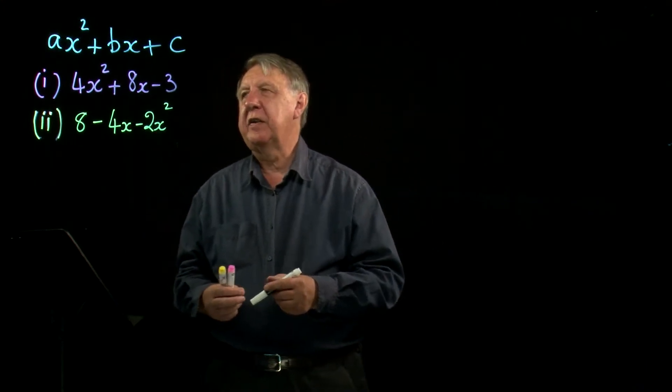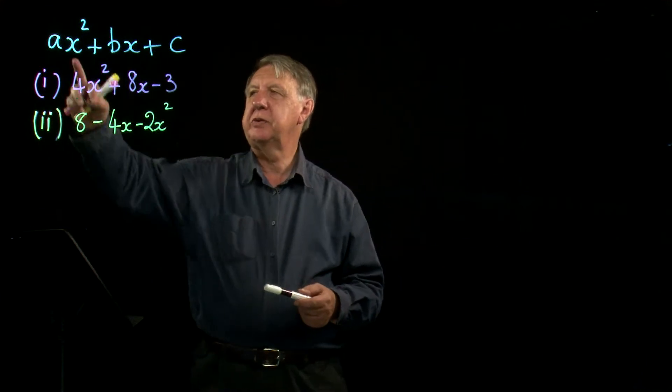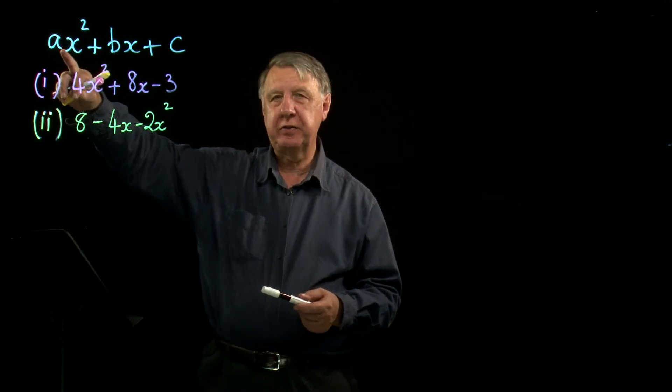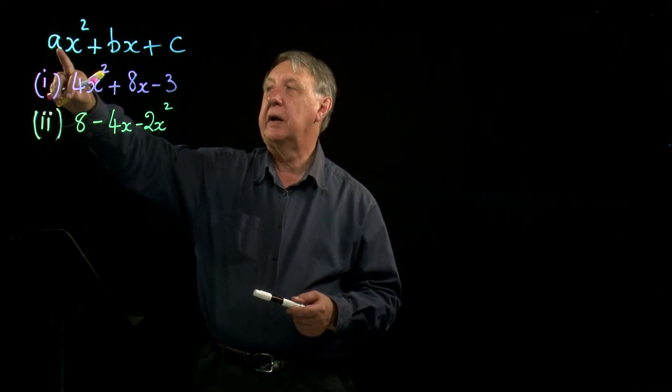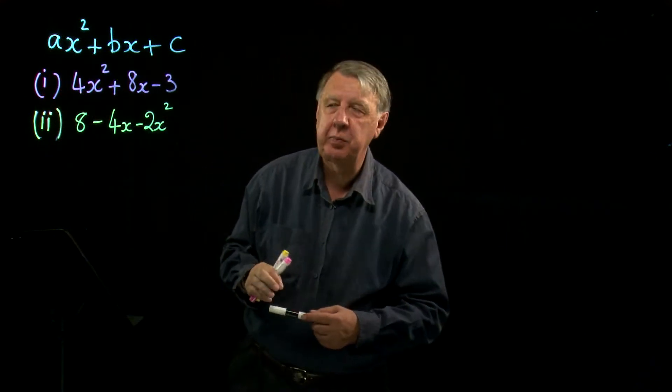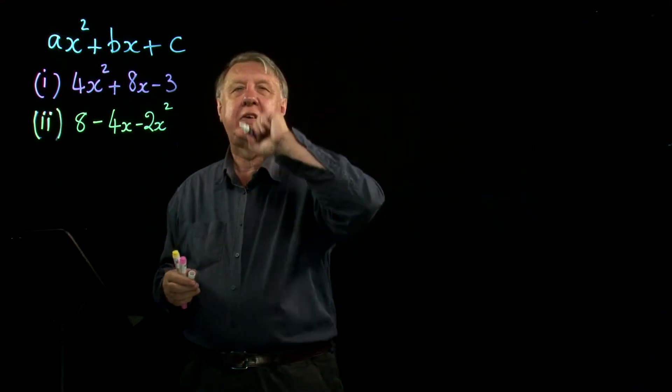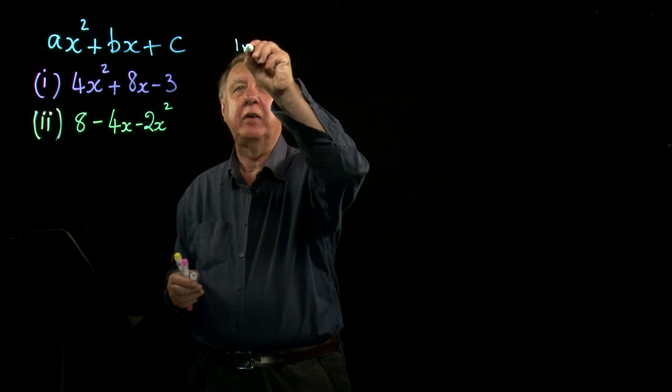Let's look again at the completing the square method. Now we're going to move on so that the coefficient of x squared is no longer one and can be anything. The full version then is ax squared plus bx plus c.